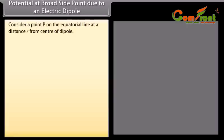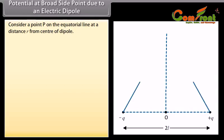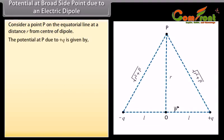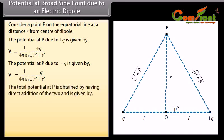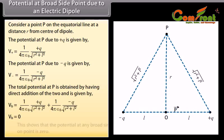Potential at broadside point due to an electric dipole. Consider a point P on the equatorial line at a distance R from the center of dipole. The potential at P due to plus Q is V positive equals 1 upon 4π ε₀ multiplied by Q upon √(R² + L²). The potential at P due to minus Q is V negative equals 1 upon 4π ε₀ multiplied by minus Q upon √(R² + L²). The total potential at P is VB equals zero. This shows that the potential at any broadside-on point is zero.